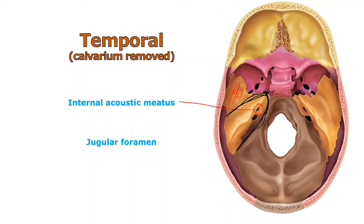Don't confuse the internal acoustic meatus with the jugular foramen, which is between the temporal bone and the occipital bone. A foramen is simply the word for a hole — not quite a tunnel. These anatomical terms come from a collection of names across hundreds of years, which is why the naming isn't always consistent. The internal acoustic meatus is entirely part of the temporal bone, while the jugular foramen sits between the temporal and occipital bones.